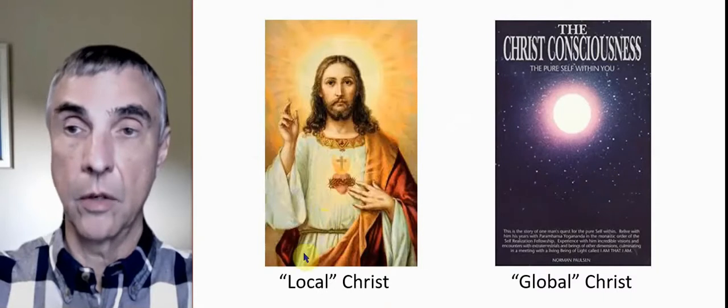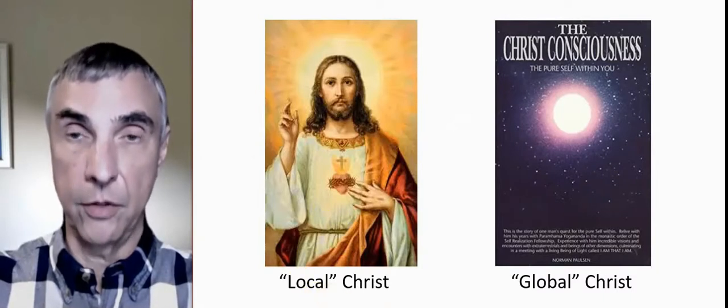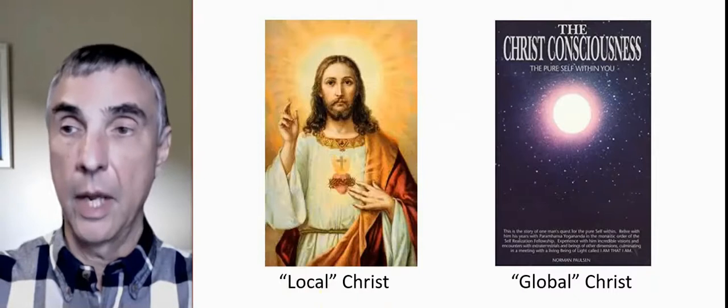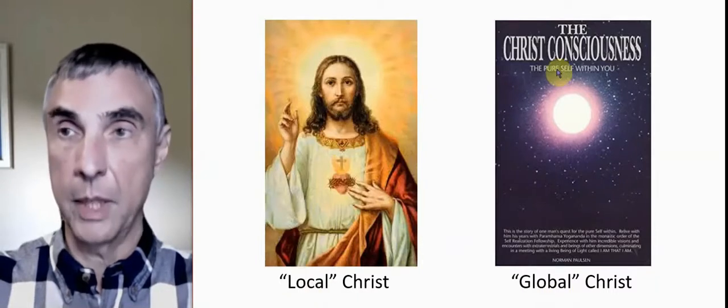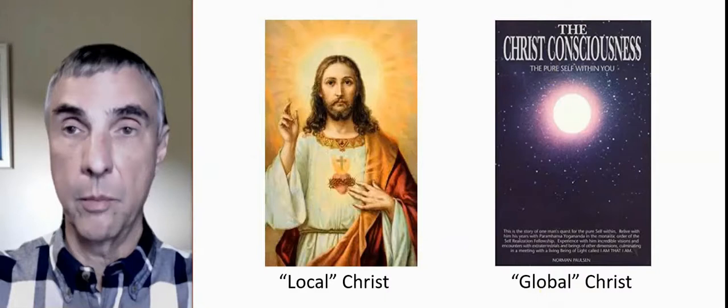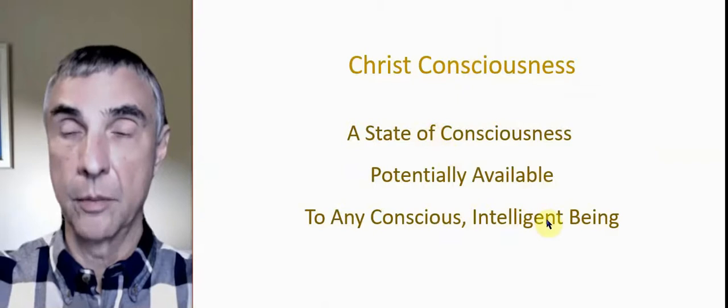So in a sense, one of these is a local label. It's restricted to Christianity, it talks about a figure in Christianity. And the other would be a more global, universal label that talks about a state of consciousness. And we might suppose that that state of consciousness is available, potentially, to any conscious, intelligent being.